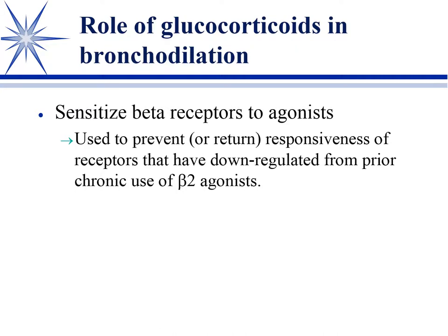One last point about bronchodilators - what effect do glucocorticoids have in bronchodilation? This has to do with chronic use of beta-2 agonists. In human medicine it's really well documented that chronic use of beta-2s causes downregulation of the beta-2 receptor, so people become less and less responsive to the bronchodilator. Glucocorticoids resensitize those adrenergic receptors and make them responsive again. So it's very common to include a steroid, either systemically or by inhalation, to maintain reactivity of the beta-2 receptor.